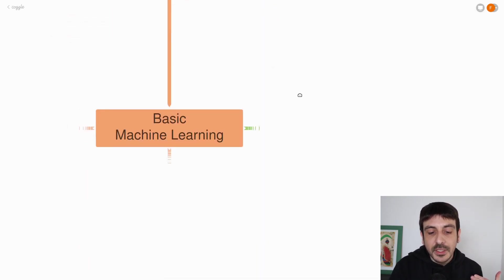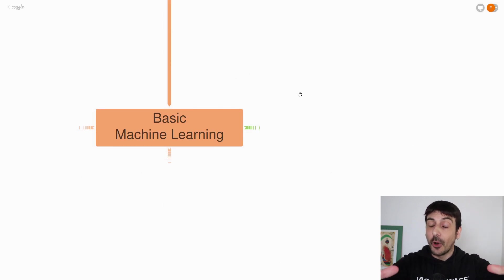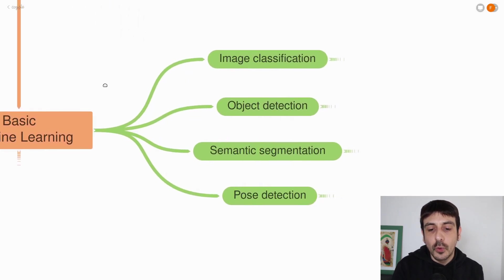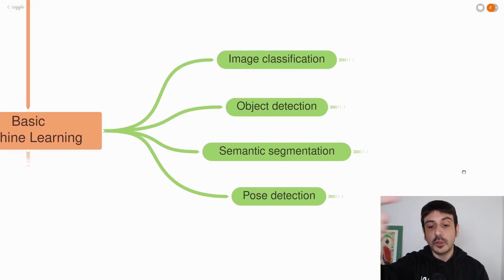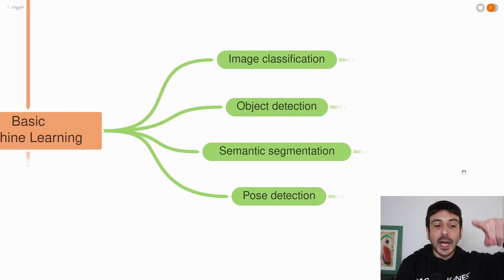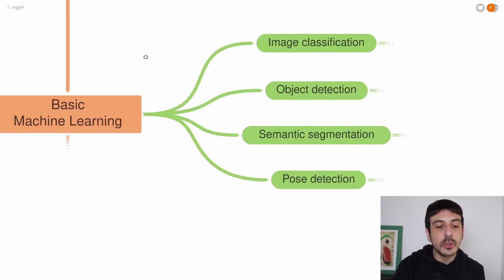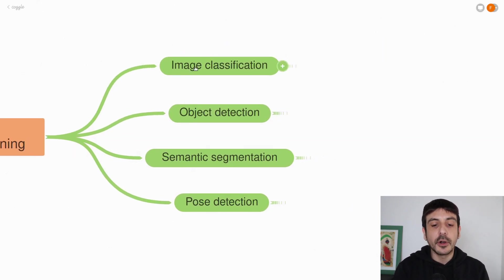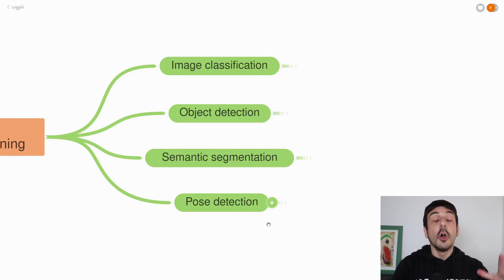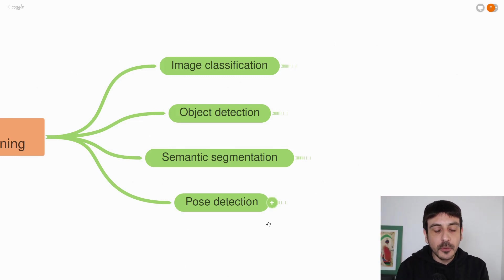The next step in this roadmap is the basics of machine learning. Machine learning is very important in computer vision, and these are the four most important tasks: image classification, object detection, semantic segmentation, and pose detection. This is the way I recommend you to learn machine learning — by learning how to solve these four very specific problems. By learning how to build an image classifier, an object detector, a semantic segmentation algorithm, and a pose detector, you will have learned so much machine learning and you will be super proficient in it.